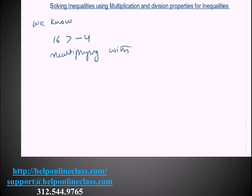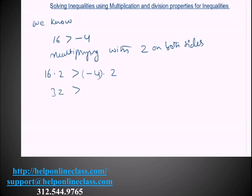Multiplying with a positive number, say 2, on both sides: 16 times 2 is greater than negative 4 times 2. That gives us 32 greater than negative 8, which is true.